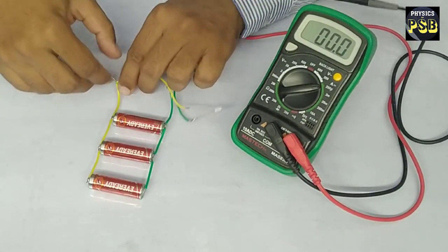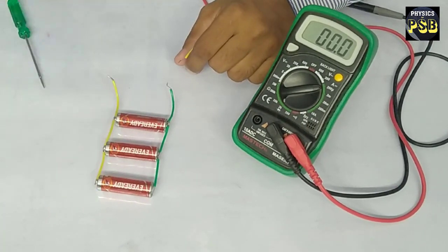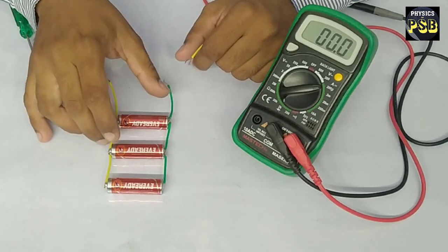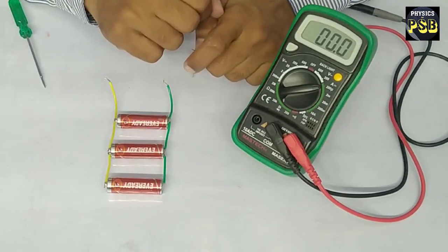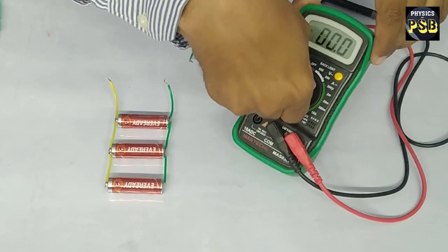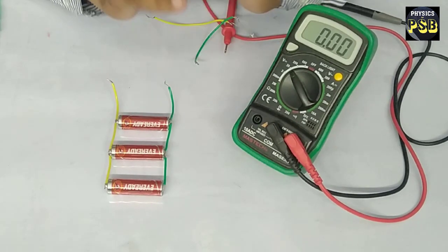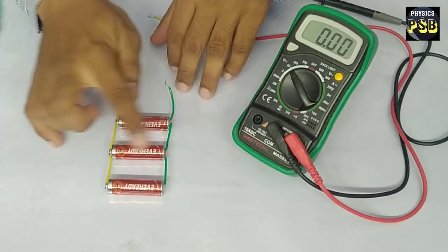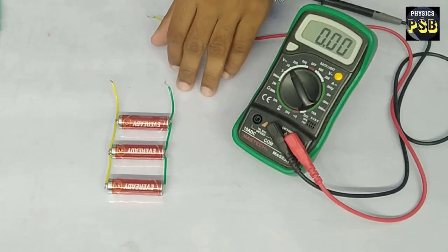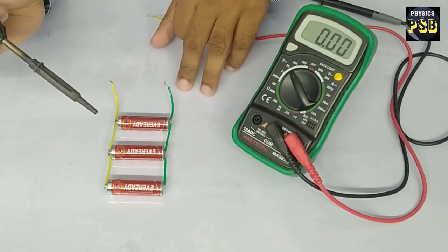Now I will measure the voltage, that is the EMF and current supplied by individual cells. First I will measure the voltage supplied by individual cells. For that I will desolder these electric cells with the help of soldering iron.